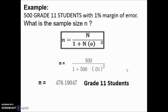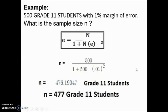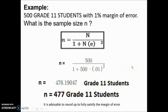Since we are talking about Grade 11 students — that is, people — the decimal 0.190 will be converted to a whole number. Therefore 476.190 becomes 477 Grade 11 students. Even though the decimal is 0.190, we round up to 477 because we are talking about a person, so 0.190 still represents a person and we should not discard it. It is advisable to always round up the sample size to fully satisfy the margin of error — even if the decimal is 0.1, 0.2, or 0.3.